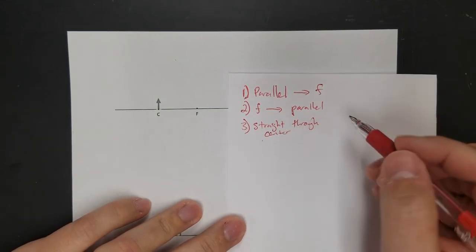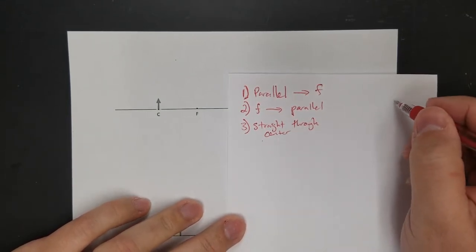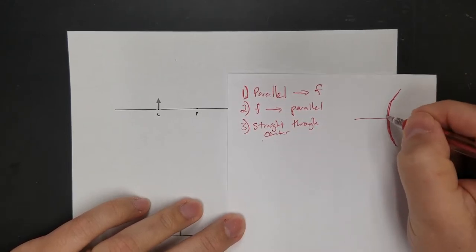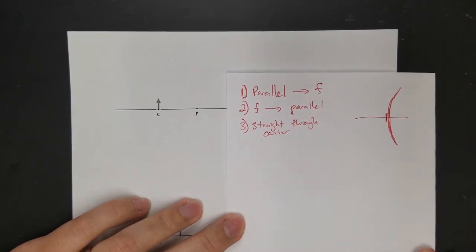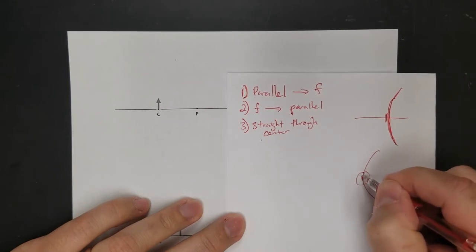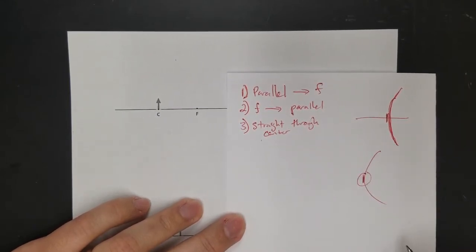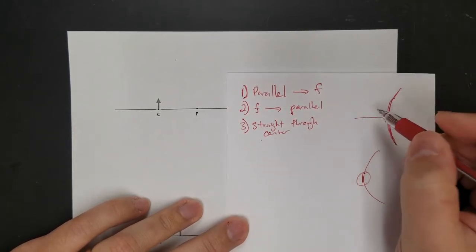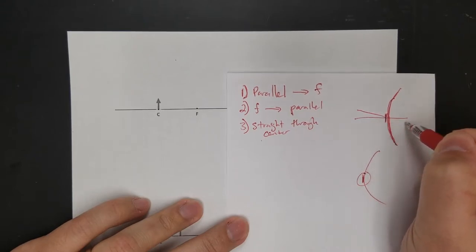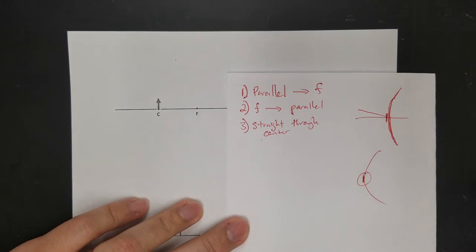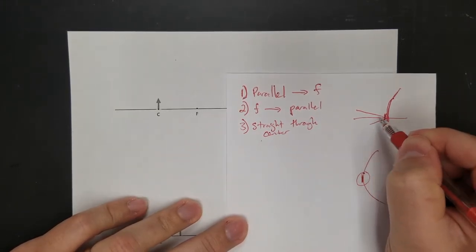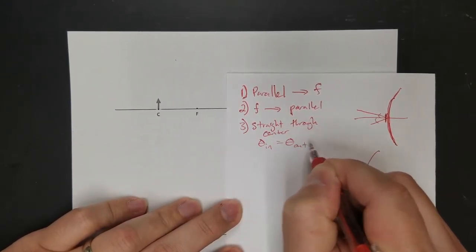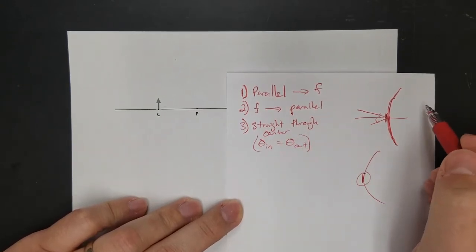And then the third one is straight through the center. But on a mirror it's a little bit different. Imagine a spherical mirror — if you aim straight at the middle, that part of the mirror is basically a flat mirror. So what's going to happen is it's kind of like going straight through the middle on a lens, but instead of coming out the back, it reflects. So theta in equals theta out — it's basically just the law of reflection for plain mirrors.